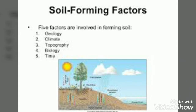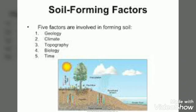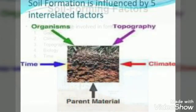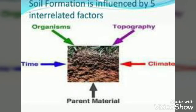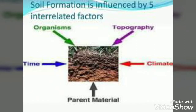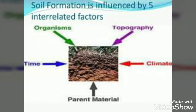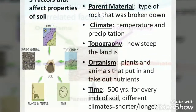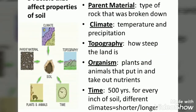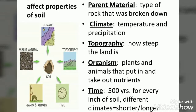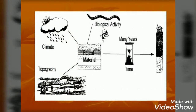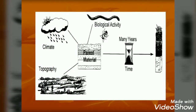Soil is formed slowly as the parent material, that is the rock, erodes into tiny pieces near the earth's surface. Organic matter like plant and animal waste decays and mixes with inorganic materials like rock particles, minerals, and water to form soil. The constant action of winds, rains, flowing water, and heat of the sun leads to the weathering of rocks, resulting in the formation of soil. This process goes on for thousands of years.